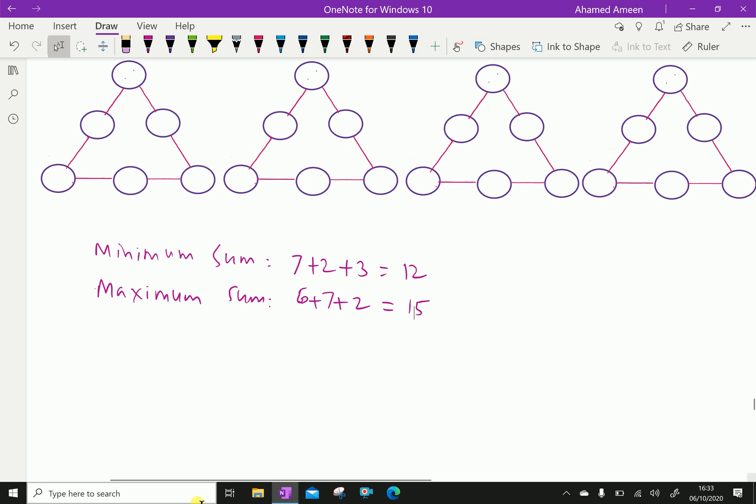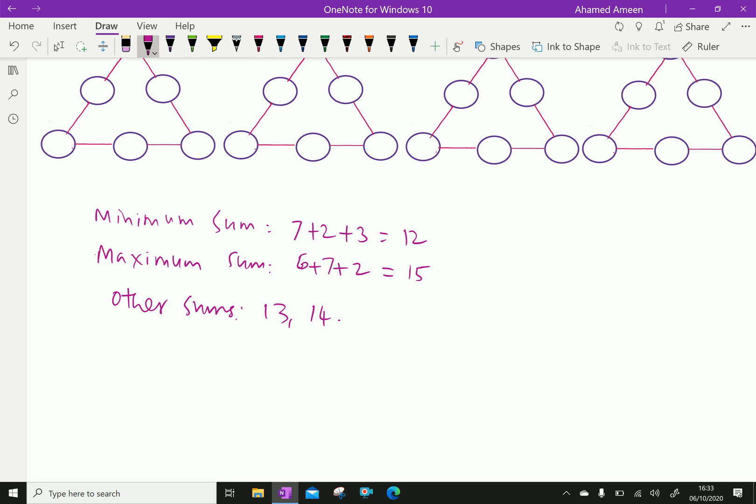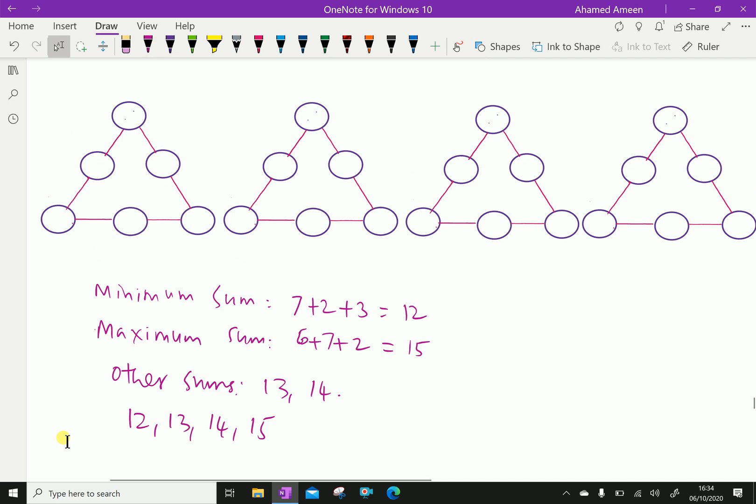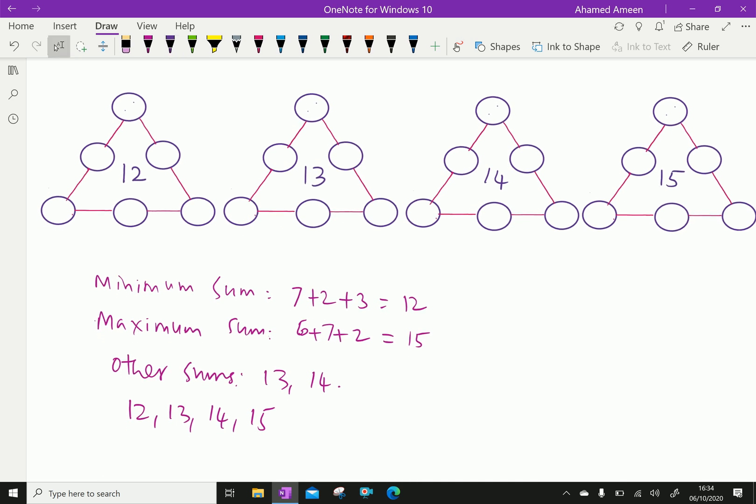So others, other sums. So in between 12 and 15 there is 13 and 14. Therefore, our sums for our magic numbers are 12, 13, 14 and 15. So we will get sum is 12, sum is 13, sum is 14 and sum is 15.